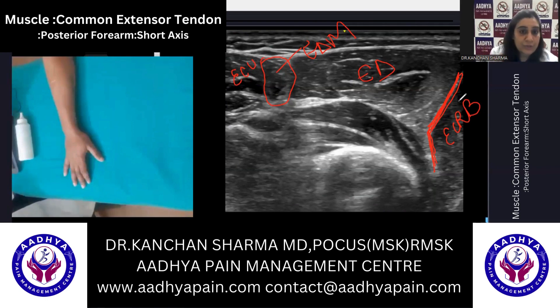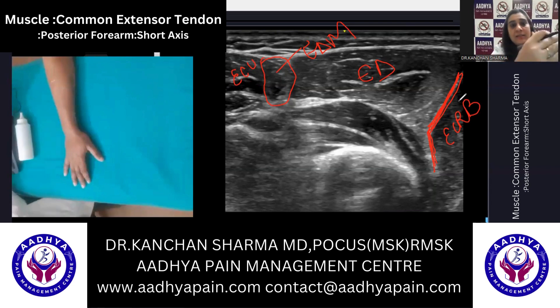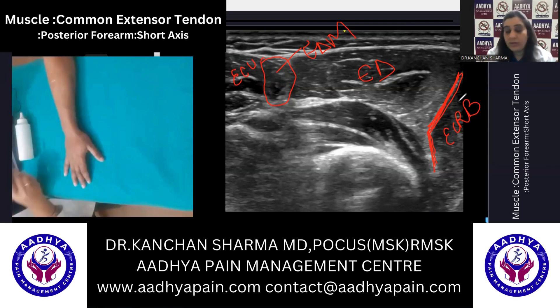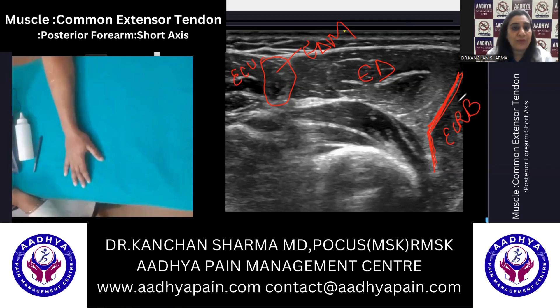From there you can follow them where they take their origin from the common extensor tendon, or you can follow them down to the dorsal compartments and look at their insertion. This is an easy way to find out the different muscles forming the common extensor tendon.